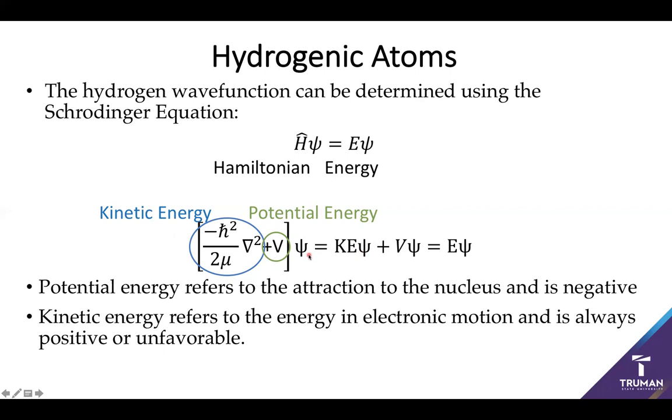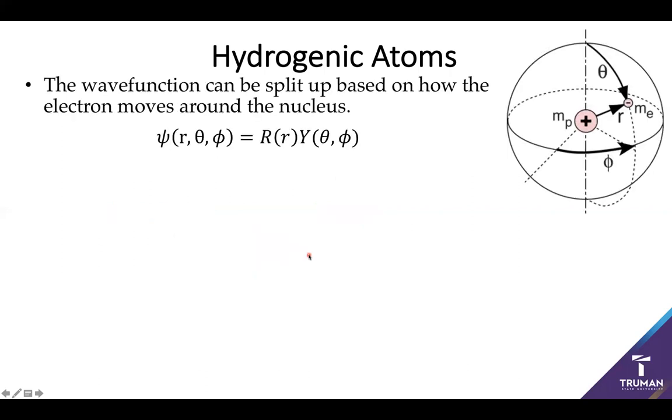Earlier we talked about how a wave function could exist in three dimensions based on X, Y, and Z directions when talking about a particle in a box. However, turns out you need to use spherical coordinates. Spherical coordinates tell us how an object moves along a sphere using three key dimensions.